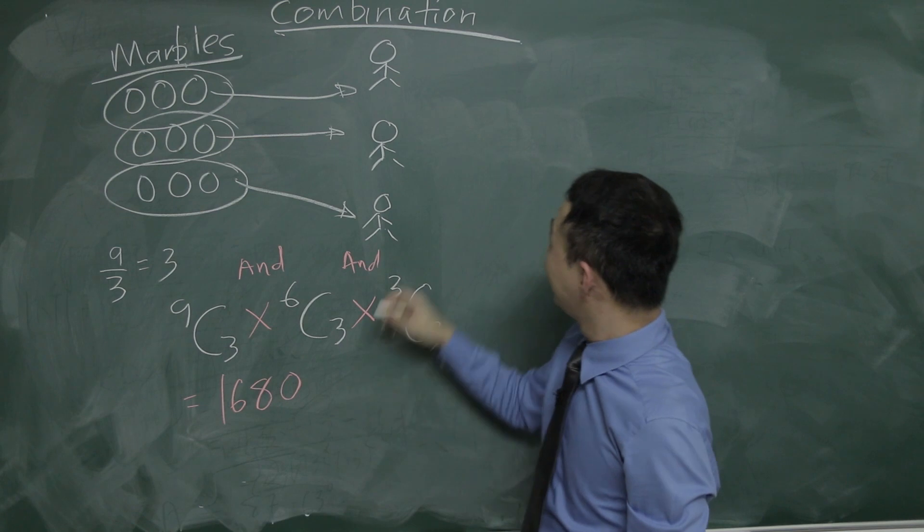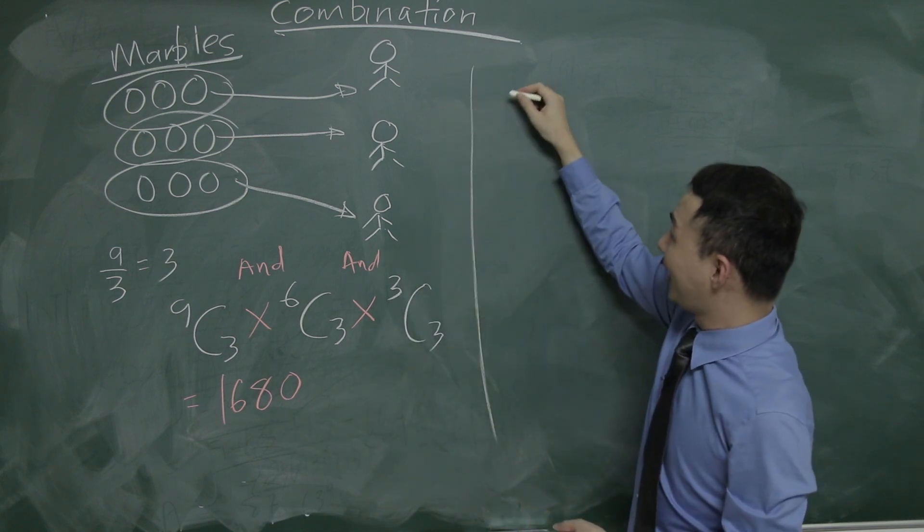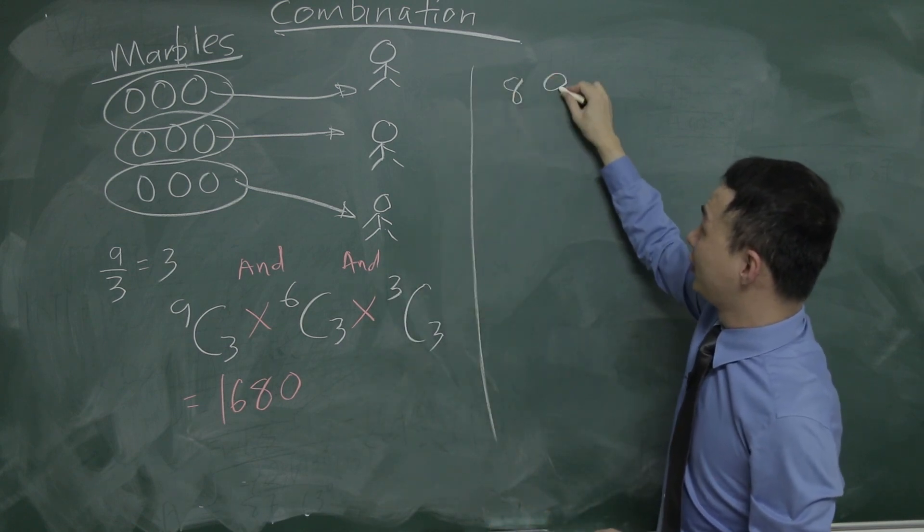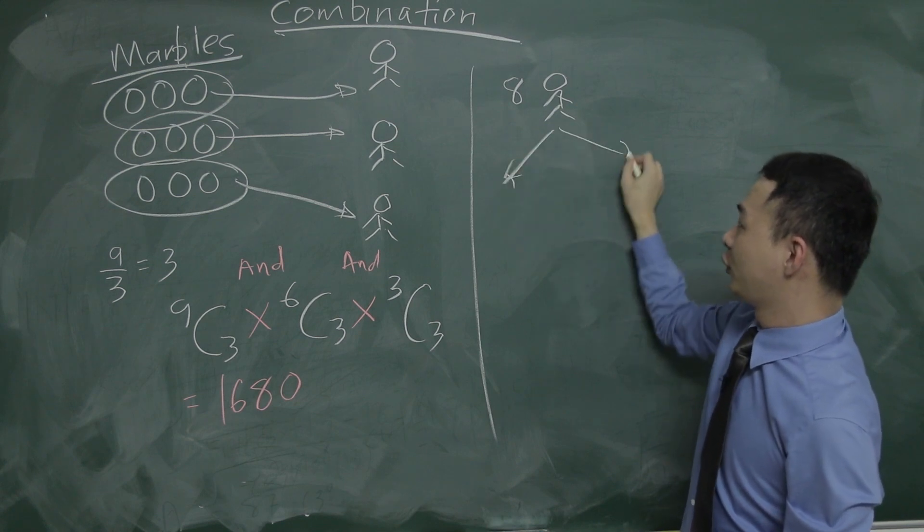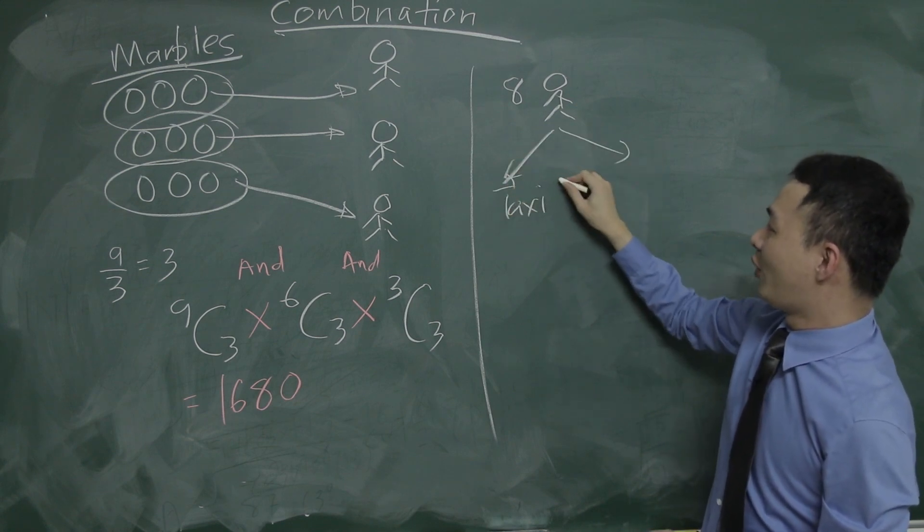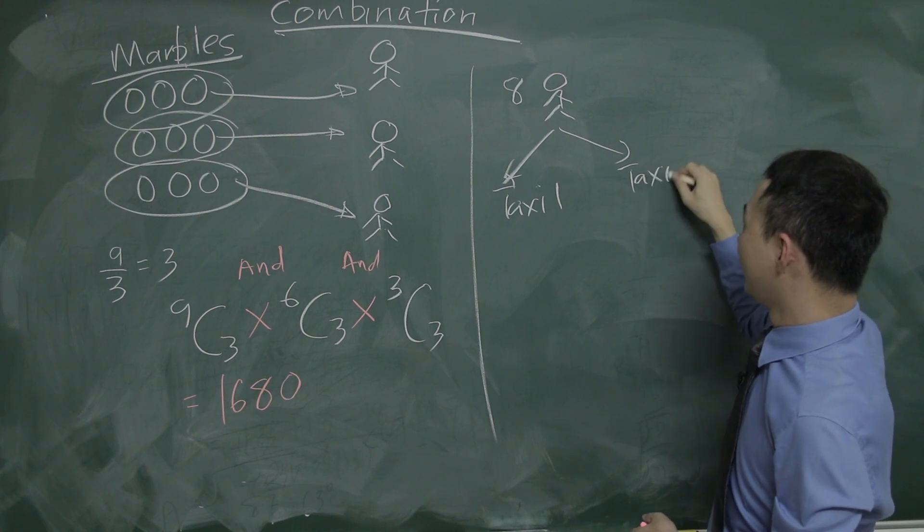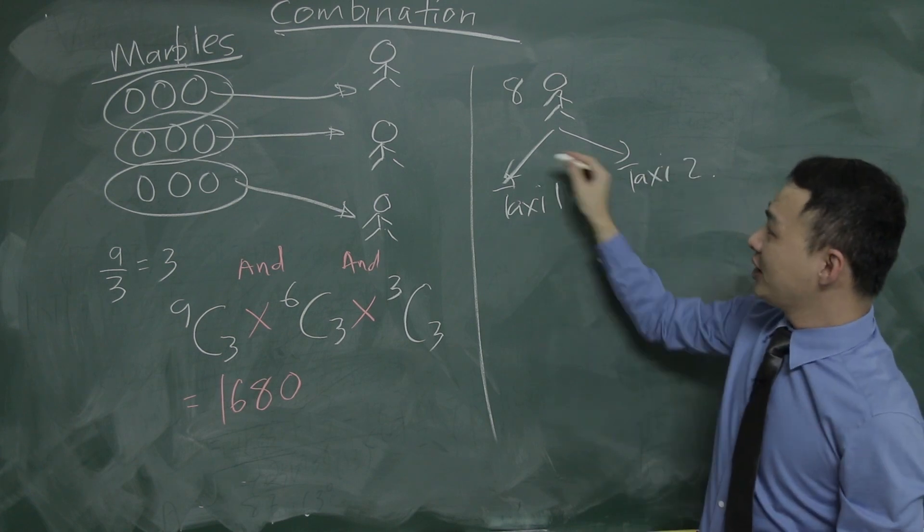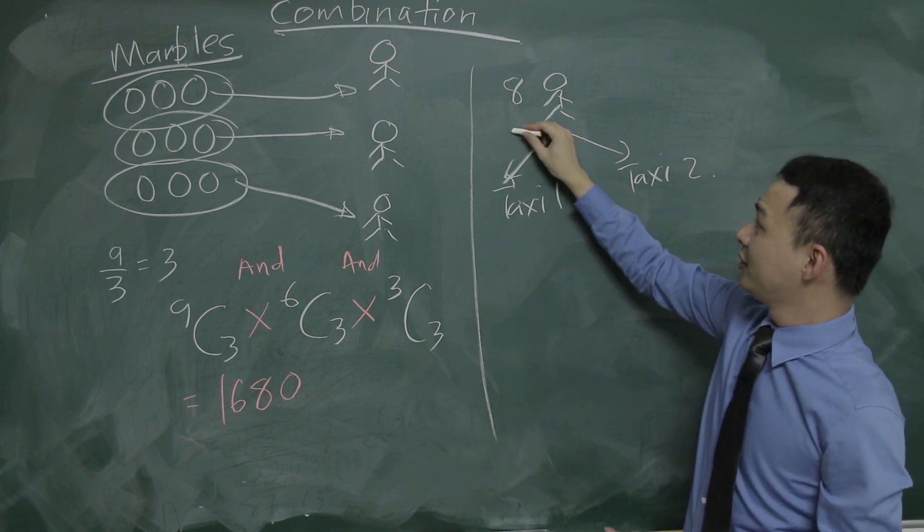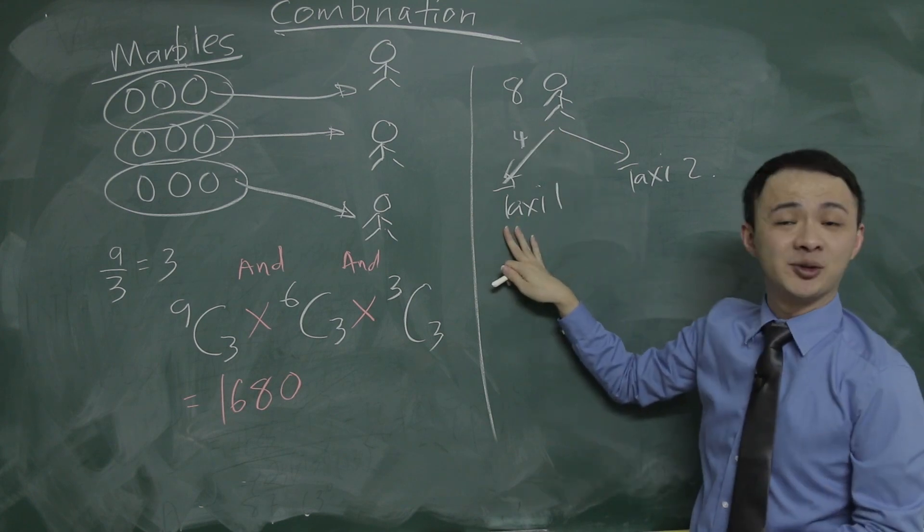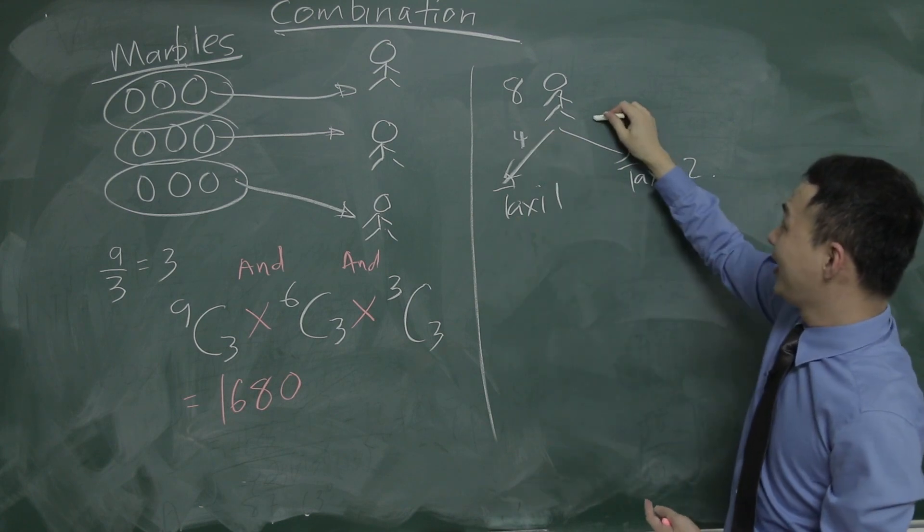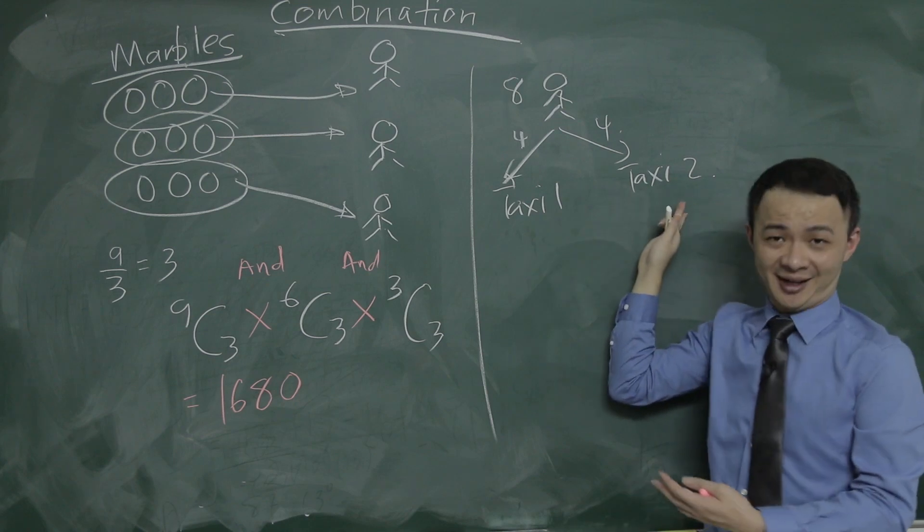So let's say, similar one, let's say I have eight students here, and then we want to go into two taxis, taxi number one, and taxi number two, and assume each of the taxi can fit four students only, so first four students will go into the first taxi, and another four students will go into the second taxi.